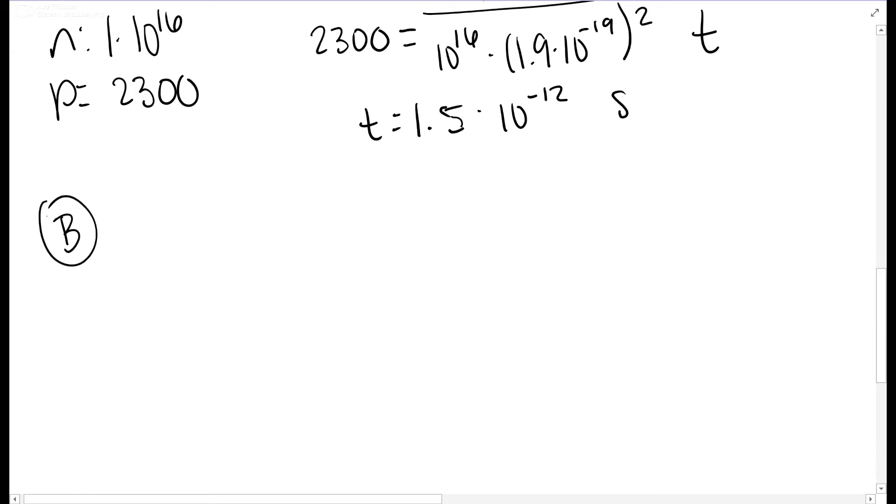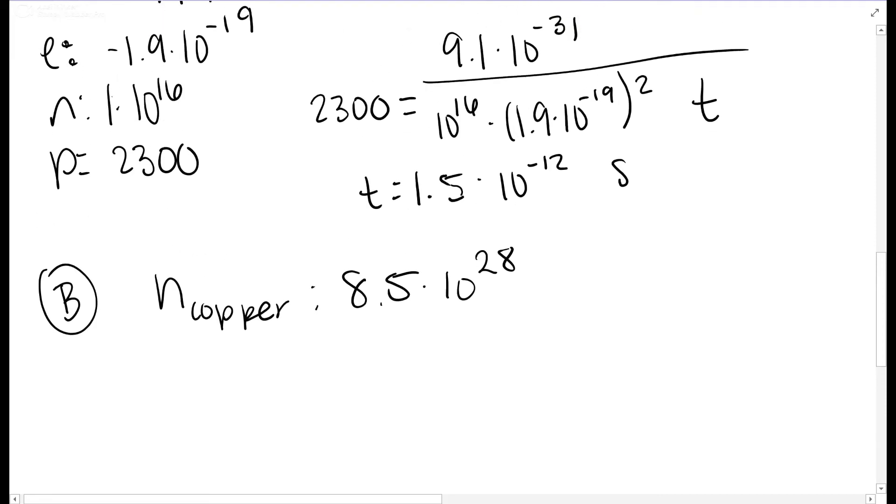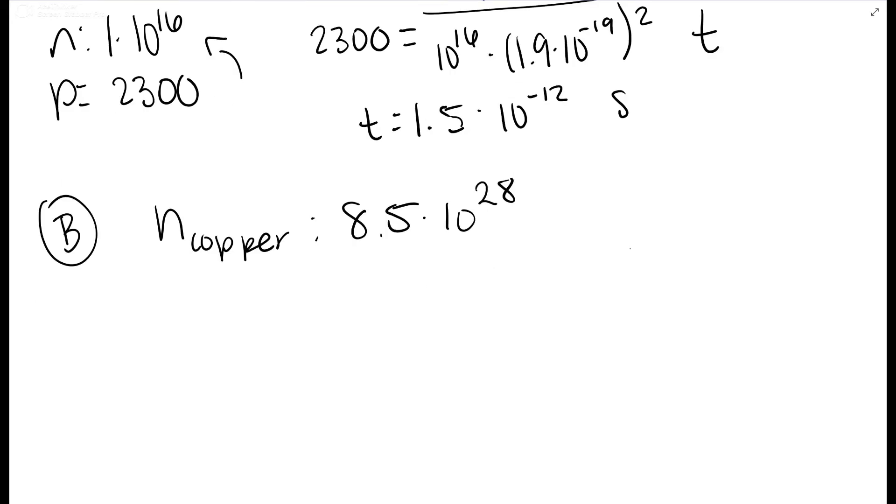If you look it up, n for copper is 8.5 times 10 to the 28th, compared to n for silicon of 1 times 10 to the 16th. So n of copper is much larger than n of silicon.